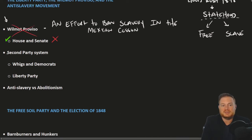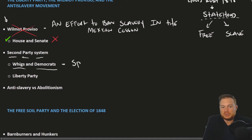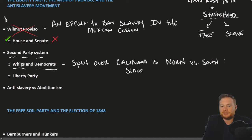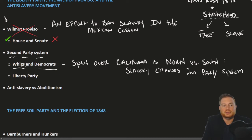Interestingly, this debate has very little to do with the second-party system — that is, Whigs and Democrats. This was something we saw earlier with Missouri: the split over California has less to do with party affiliation and more to do with North versus South. Depending on where one is located in the nation has much more to do with one's stance. These political parties begin to erode. We could say slavery erodes the second-party system, because now you have Northern and Southern Whigs arguing with each other, and Northern and Southern Democrats arguing with each other.